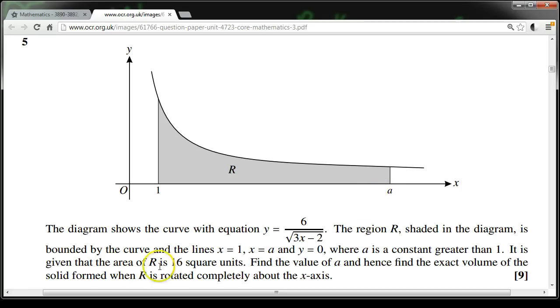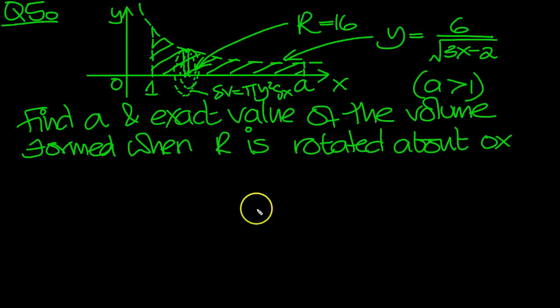It is given that the area R is 16 square units. Find the value of a and hence find the exact volume of the solid formed when R is rotated completely about the x-axis. So let's have a look at this then. I put the question here and a little bit of information to visualize the question.